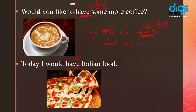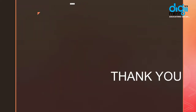So yahan par humne dekha, kuch examples ke saath, ki kis tarah se hum 'have' ko as a main verb use kar sakte hain. Aur agar aap nahi kar rahe hain, toh please start using 'have' as a main verb, taaki aapke bolne mein ek accha impression ban sake. Is lesson ke baad aap log khud koshish kijiye — har condition ke liye at least ek ya do sentences banaiye, aur aap chahein toh hume bhi bhej sakte hain. I hope aapko yeh clear ho gaya hoga — the usage of has or have as a main verb in English. Hamaara next video hoga usage of get. Please tune in to our channel for further lessons. Thank you.